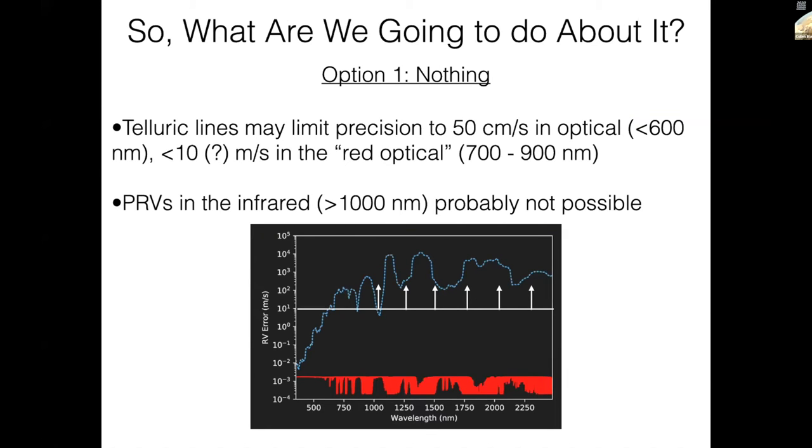So the question becomes, what are we going to do about this? One option is nothing. I think there are certain wavelength regimes and certain science cases where this may be reasonable. For example, if a 50 centimeters a second RV uncertainty due to water lines is acceptable in the optical, that's fine. But keep in mind as we move toward the red edge of the optical, say 700 to 900 nanometers, the telluric water lines themselves become much more numerous and also deeper. That's unfortunate because those wavelength regions are particularly valuable for observations of low mass stars. M stars have a lot of photons out there. So ignoring the telluric lines in that wavelength regime, probably not possible.